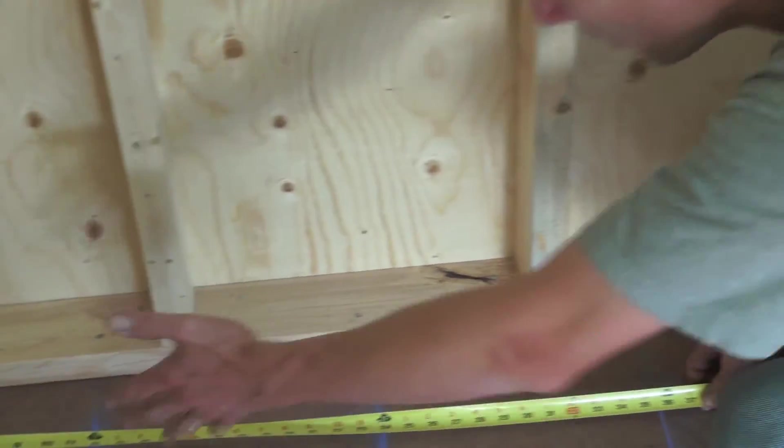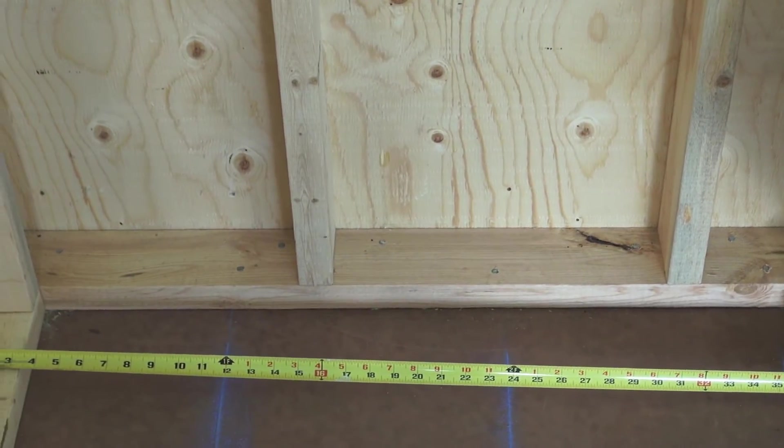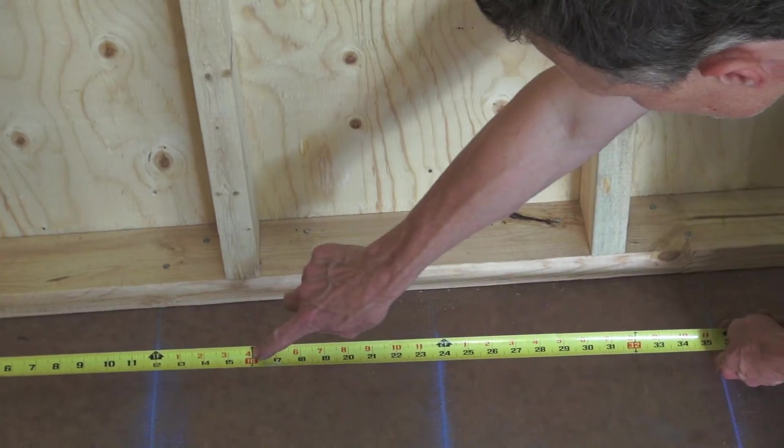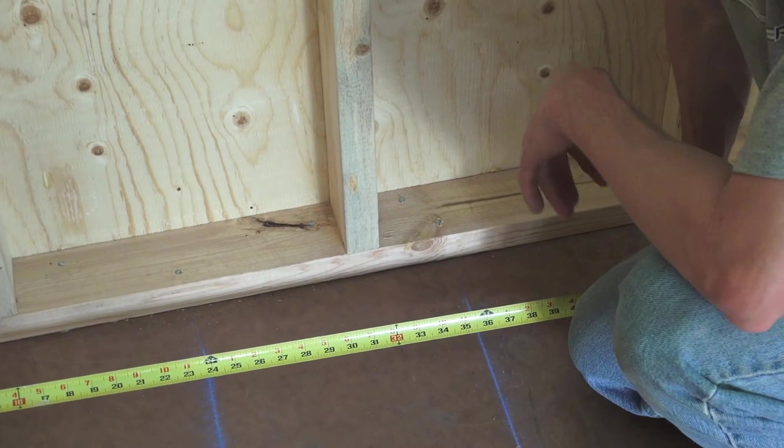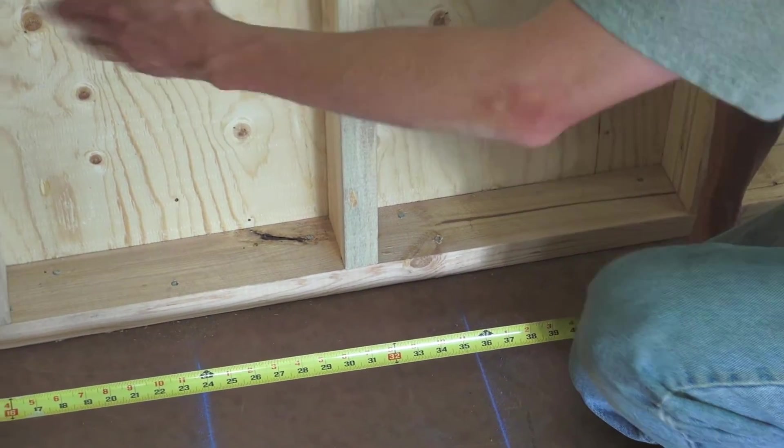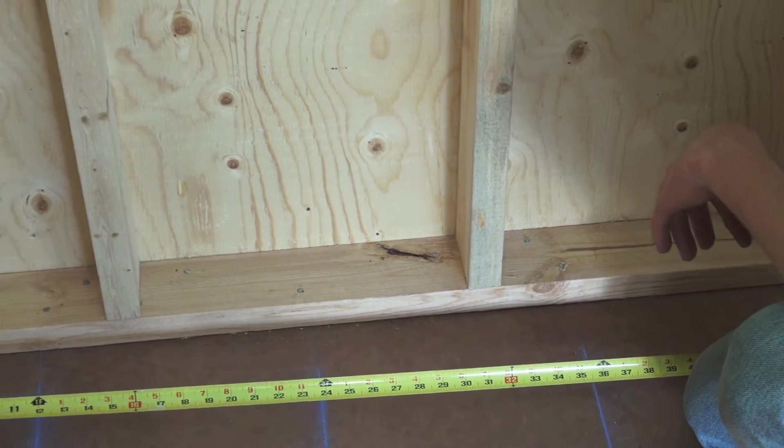But also on here they have little red marks at 16, 32, because that's where you would normally do spacing on wall studs.